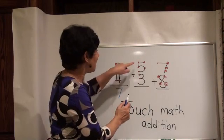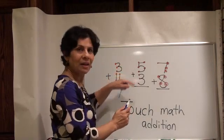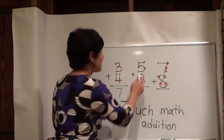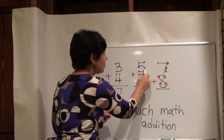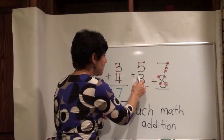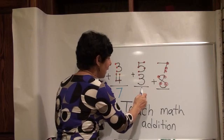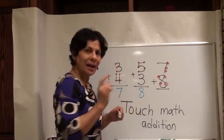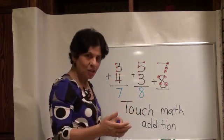Let's do another one. It's five plus three. Ready? Let's count with the dots. One, two, three, four, five, six, seven, eight. And our answer is eight. The last number that you count is your answer.